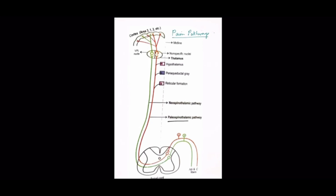Paleospinothalamic Pathway. Phylogenetically, the paleospinothalamic pathway is the oldest pathway. This pathway mainly carries the sensation of slow pain. It is a slow-conducting multi-neuron system that mediates the poorly localized pain from deep somatic and visceral structures. The fibers are mostly C fibers.